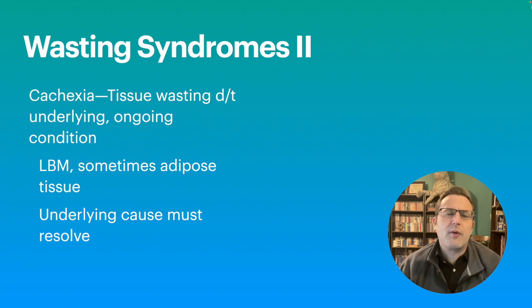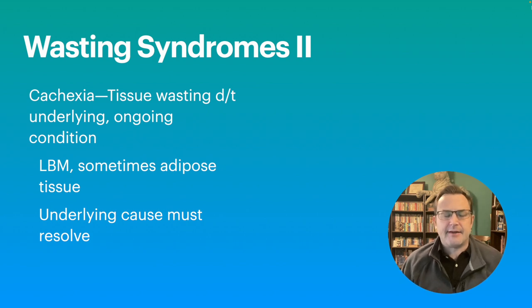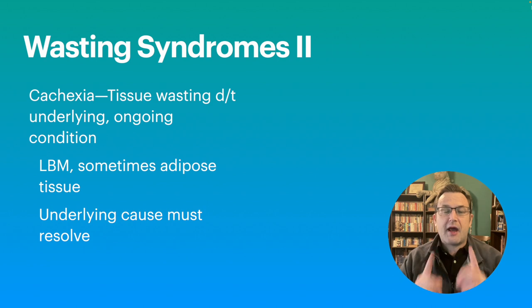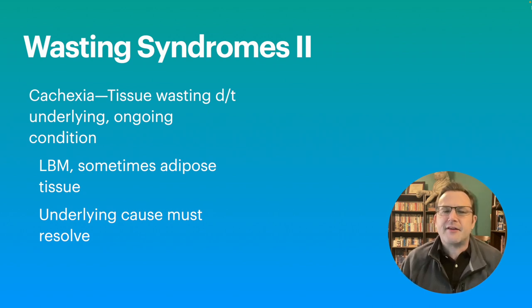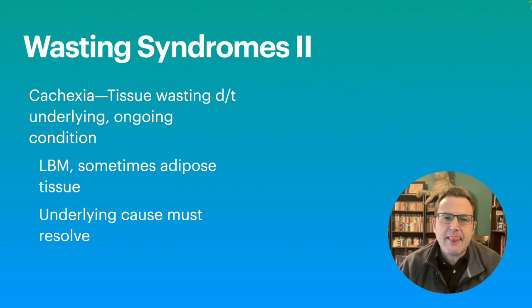The other wasting syndrome we're going to discuss is cachexia, which is tissue wasting due to an underlying medical condition. Cachexia is not really an age-related issue — age-related cachexia has been moved over more to sarcopenic aging. But just because you have sarcopenic aging does not mean you can't also have cachectic loss. Cachexia is due to things that are very catabolic: cancer, severe kidney disease, hepatic disease — anything that ramps up the metabolic state. In order to resolve a cachectic state, the underlying cause must first be resolved or at least managed.